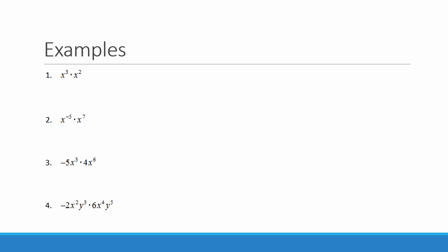In our first example, we have x to the third times x squared. We can expand x to the third as x times x times x, and x squared as x times x. Notice we are multiplying 5 x's together, which equals x to the fifth. Using our rule — adding exponents of like bases when multiplying — we get x to the 3 plus 2, which equals x to the fifth.